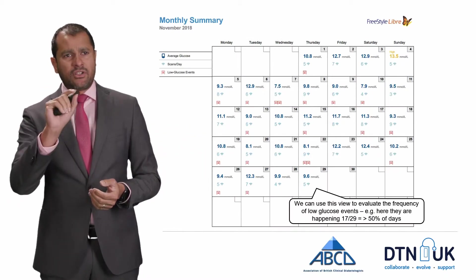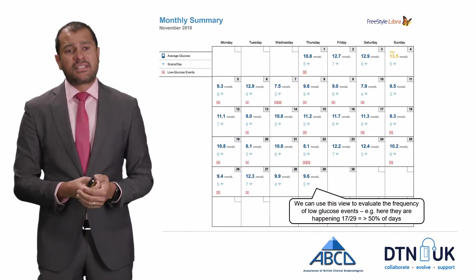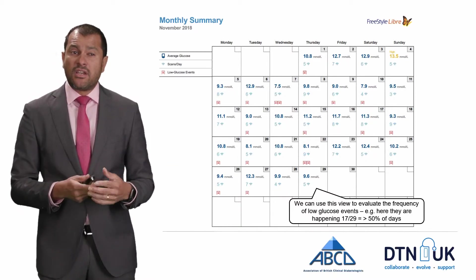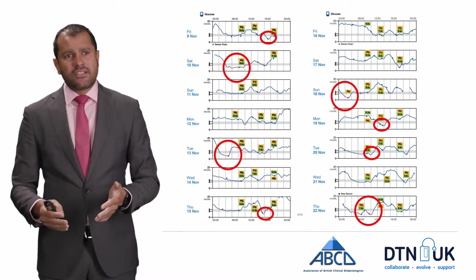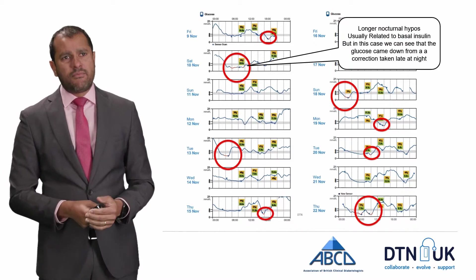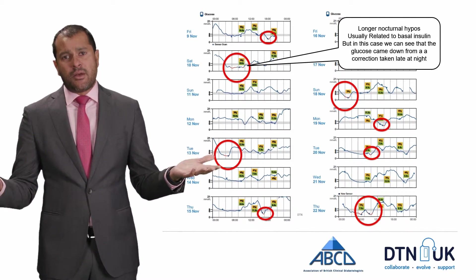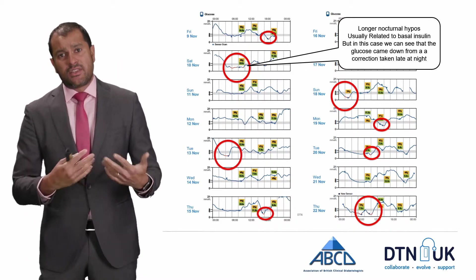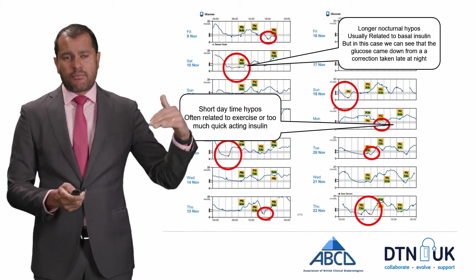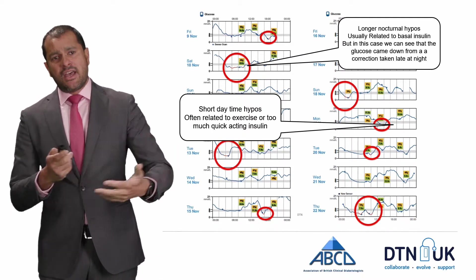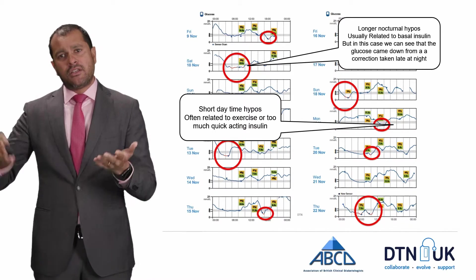Looking across the calendar view, where red blocks show days with at least one hypo, this individual has had 17 hypo days in the last 29 days — more than 50% of days — which suggests a high level of hypoglycemia. Going into the daily traces, you can see long nighttime hypos. In this scenario, the hypo is coming off a big correction, suggesting the overnight correction may be a bit too high. In the day there are shorter hypos where the glucose dips down and comes back up, suggesting the patient may have good warning signs as they're scanning when low and treating.